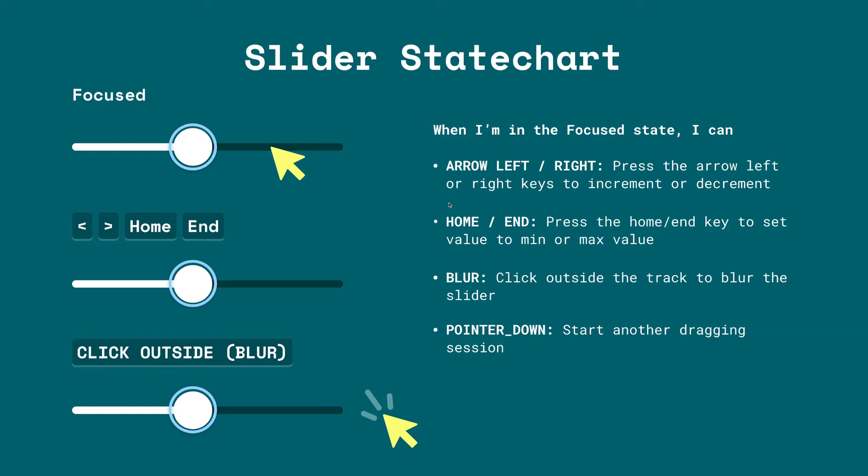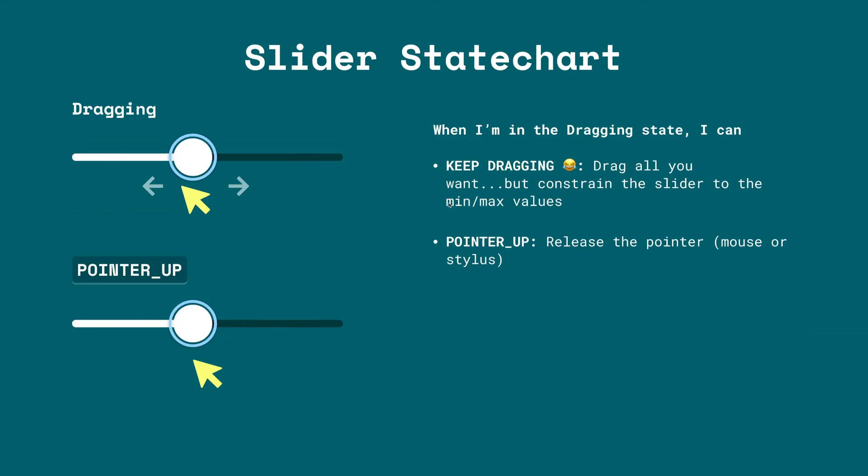When the slider is in the focus state, you can send a few events. You can press arrow left or arrow right to increment or decrement the value. You can press the Home and End keys to set the value to the minimum or maximum. You can also blur — clicking outside the component resets it back to the idle state. Or you can pointer down to start dragging, which takes the slider into the dragging state. In the dragging state you can scrub the track to change the value rapidly, or pointer up to release and return to the focus state.